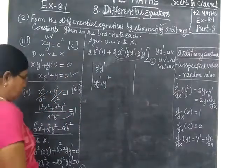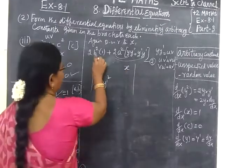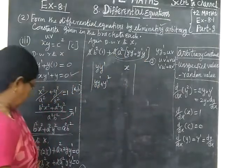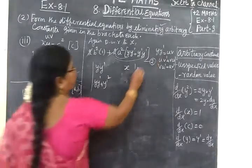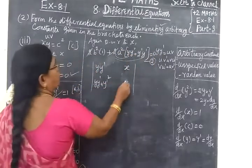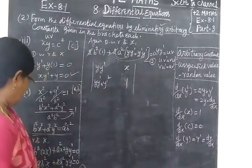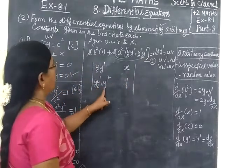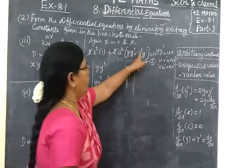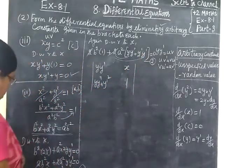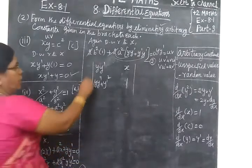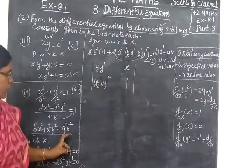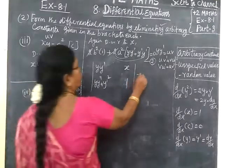So taking B squared in the room: 2 cancels out. This equals 0. So A squared y y dash, plus y dash squared, plus B squared x equal to 0. Again eliminating A squared B squared, that is equal to 0.